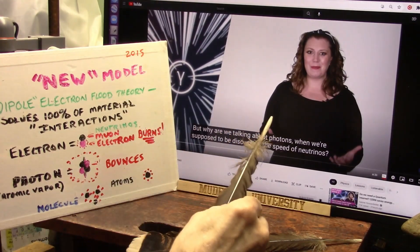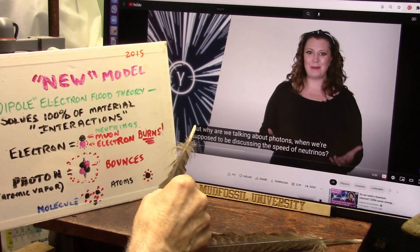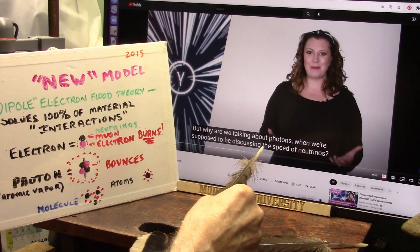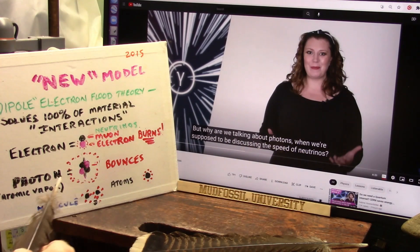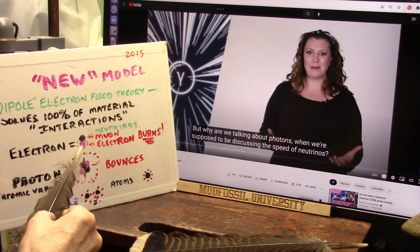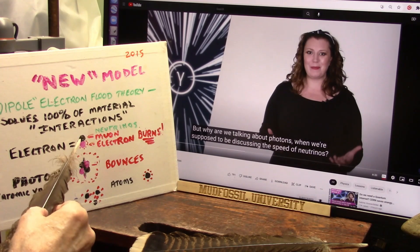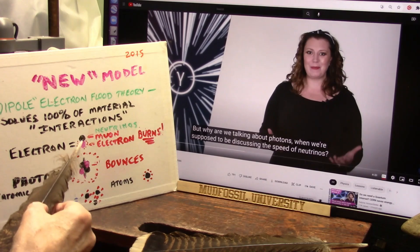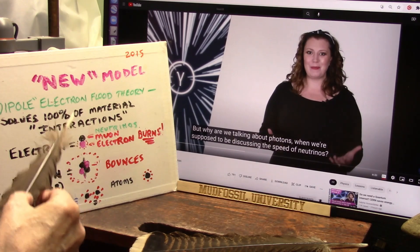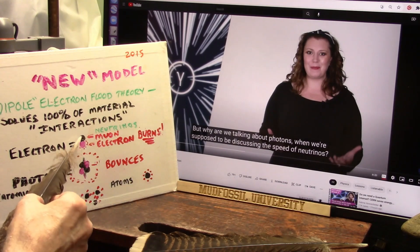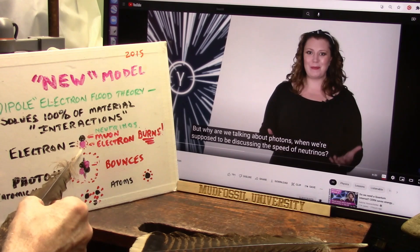I'm going to let Kirstie talk because she's into my area now. She says, why are we talking about photons when we're supposed to be discussing the speed of neutrinos? Photons, right there, are made of electrons. A glowy one and a black one. Nobody ever knew the black one was there. That's the muon neutrino. That's the electron neutrino. That's why we're talking about photons, because everything is made of these two particles. This is the new dipole electron flood theory. It means everything is made of these, which we always call an electron. So everything is made of dipoles.